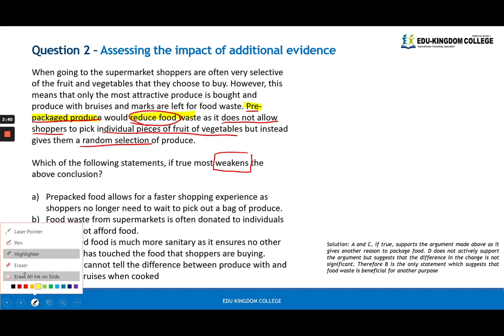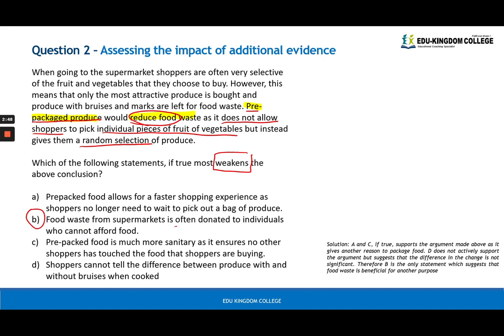The answer here is actually B. Let's see: food waste from supermarkets is often donated to individuals who cannot afford food. So why this is the best answer is we talk directly about this food waste from supermarkets, which is the main thing that we are talking about here. We're talking about food waste from supermarkets when people are selective and they buy fruit and veg and they leave behind the bruised and unattractive ones that get thrown away. Now if these were often donated to individuals, i.e. not wasted, then the statement here that pre-packaged produce is the only thing that reduces food waste is false, is weakened. It suggests another purpose for food waste that is beneficial, therefore B is the answer.